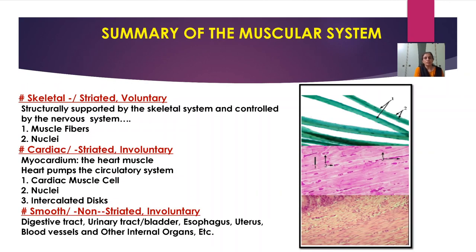Here is a summary. The first type is skeletal and striated muscle. The muscles are striated — bands are visible. See the green bands on the upper portion of the diagram; these are striations. Skeletal muscles are striated and voluntary in function, meaning they are under the control of our nervous system. They give structural support to the skeletal system and are controlled by the nervous system.